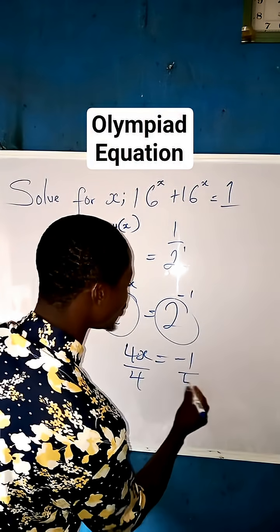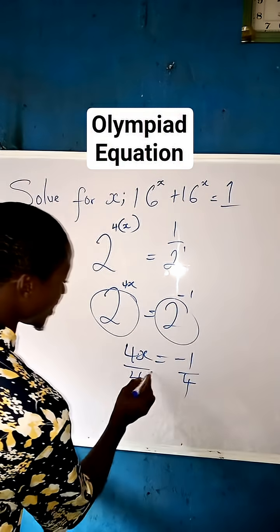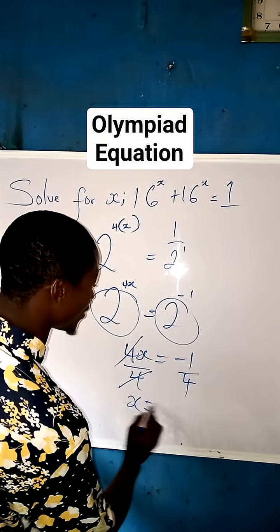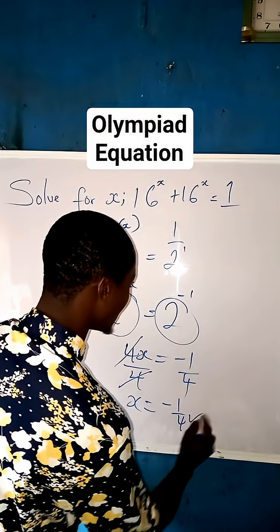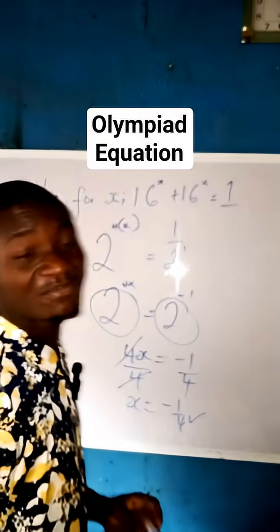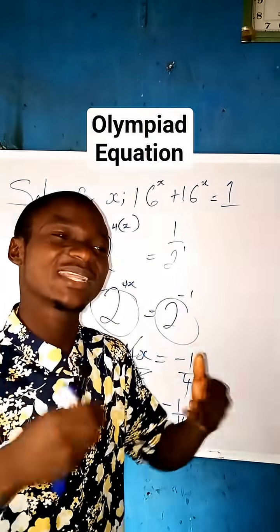Now divide both sides by 4 so that x can be set free. Now we say 4 cancel this 4. x is now equal to -1/4. This becomes our final answer.